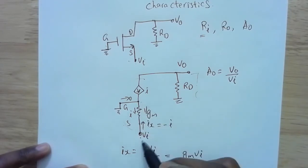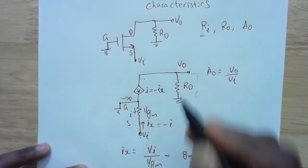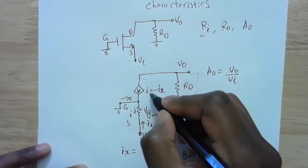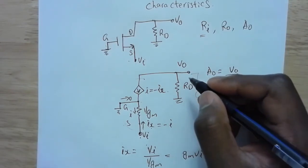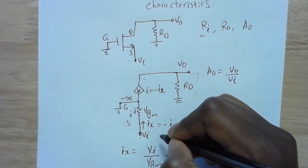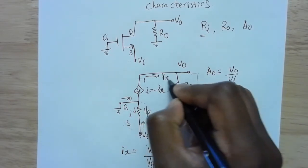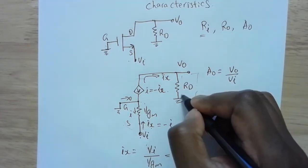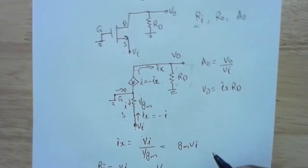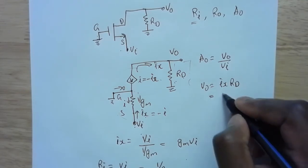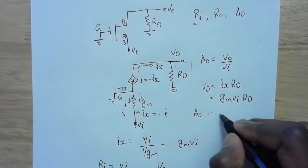Since the current into the gate is zero, the current I equals minus IX. IX flows in this direction across RD, so VO equals IX·RD. Since IX equals gm·VI, this gives VO equals gm·VI·RD. Therefore, the open circuit voltage gain Ao equals gm·RD.